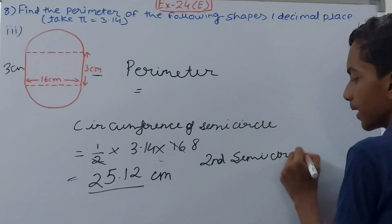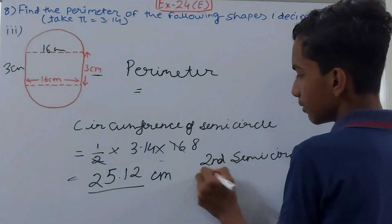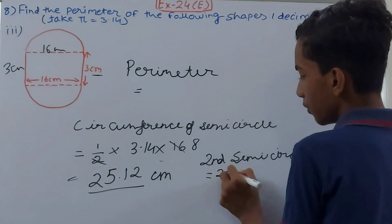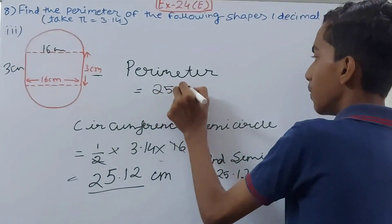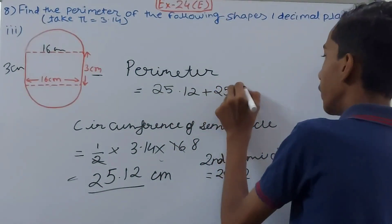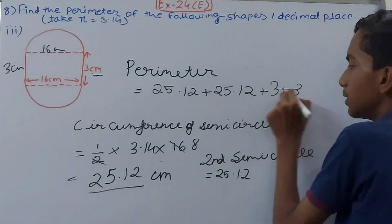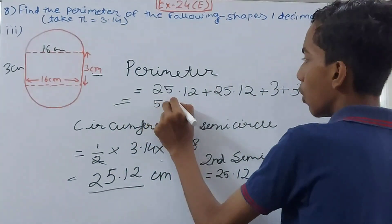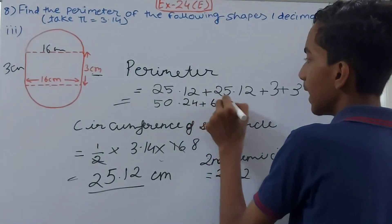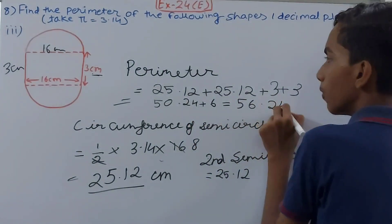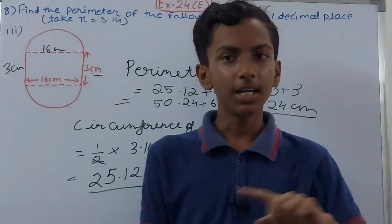The second semicircle has the same diameter of 16, so its circumference is also 25.12 centimeters. Total perimeter = 25.12 + 25.12 + 3 + 3 = 50.24 + 6 = 56.24 centimeters. That is the perimeter of this figure.